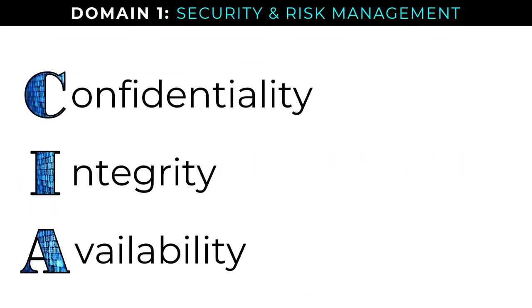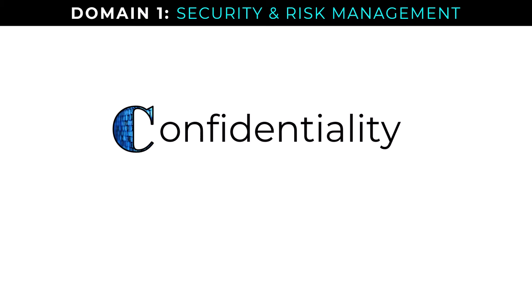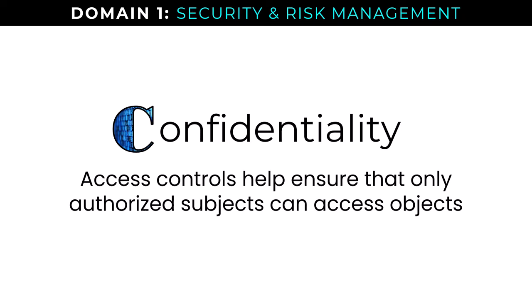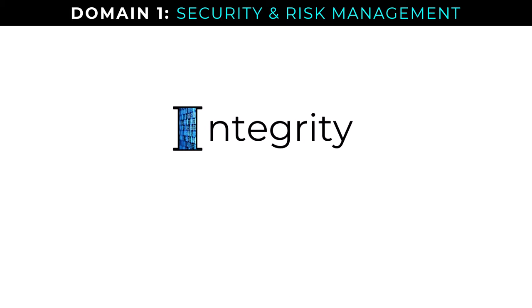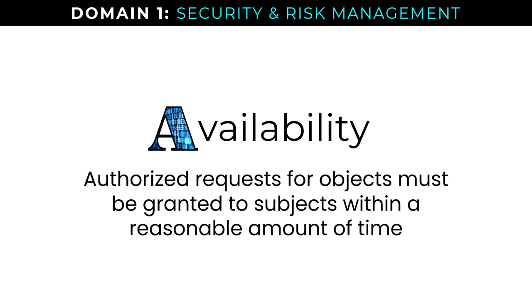Confidentiality, integrity, and availability are the core objectives of security — the CIA triad. Confidentiality means access controls ensure that only authorized subjects can access objects. On exams, subjects are generally people or security principals accessing objects — our data and assets. Integrity ensures data or system configurations are not modified without authorization. Availability means authorized requests for objects must be granted to subjects within a reasonable amount of time — if we don't have availability, all of our security is for naught.